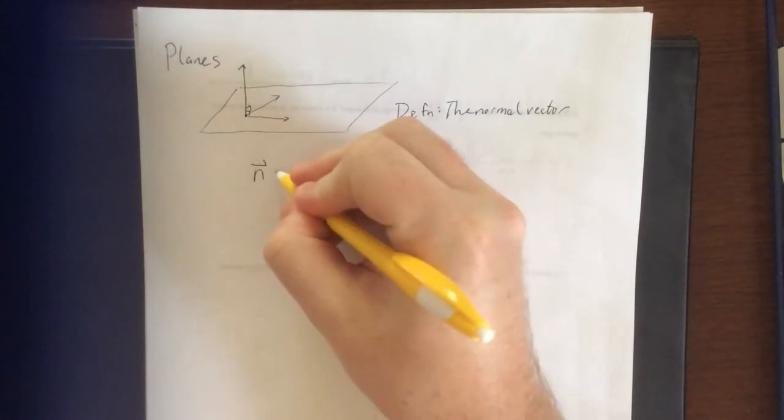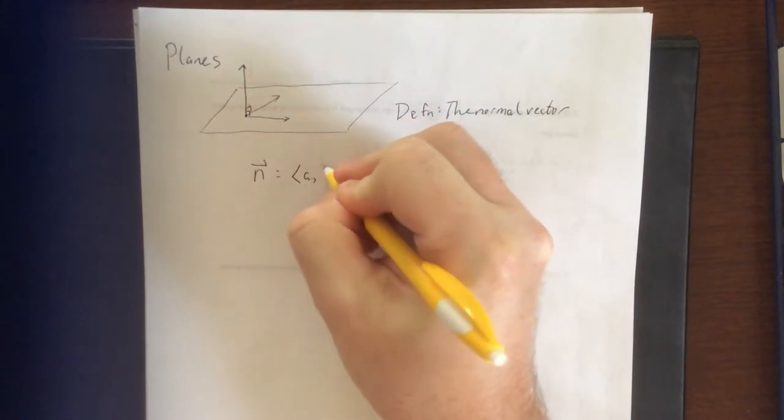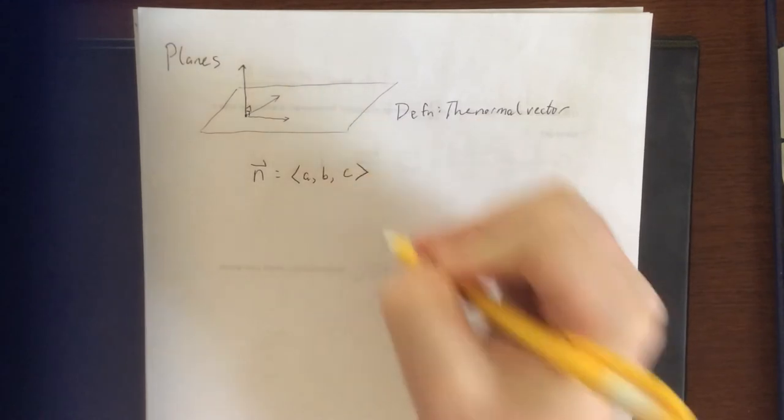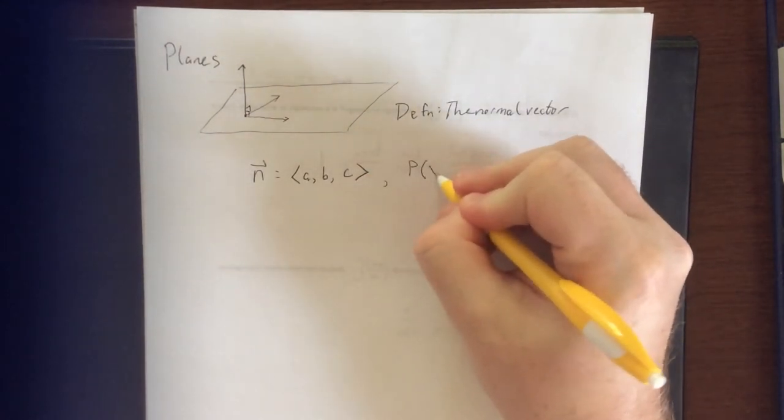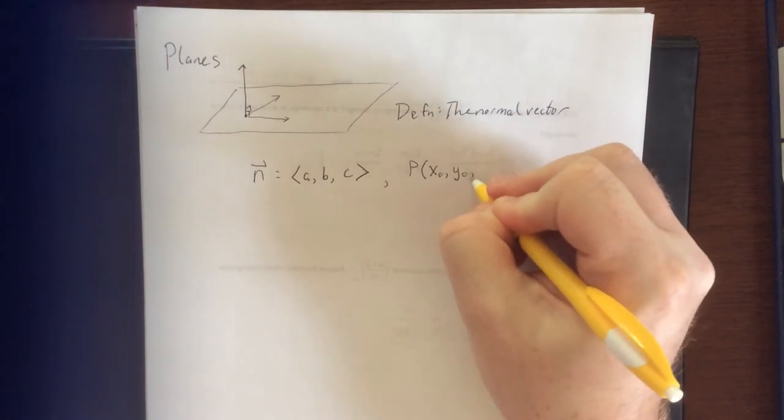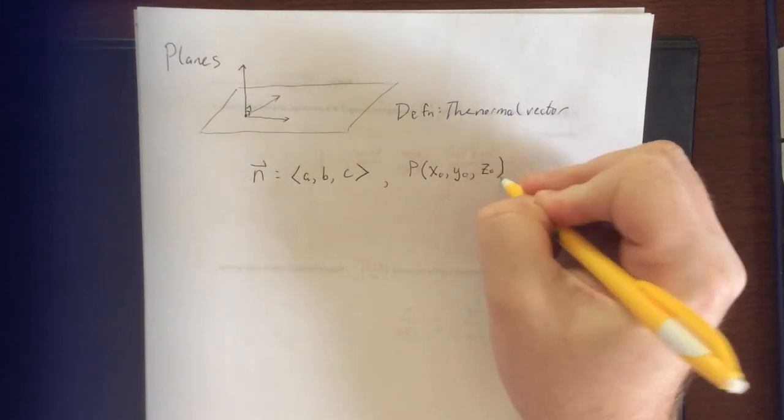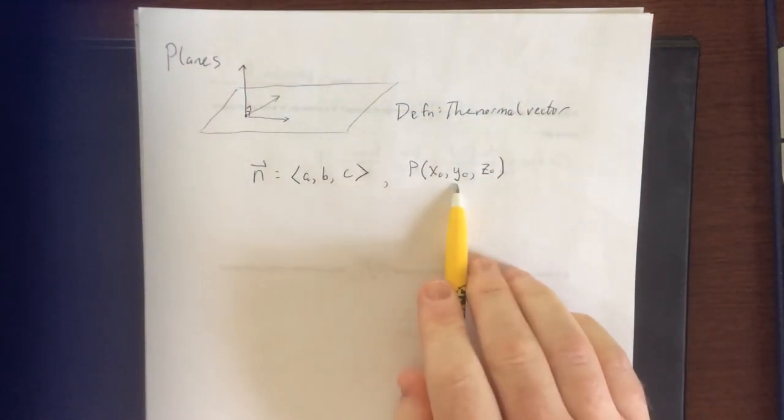So first off, let's assume that the normal vector takes on the following form. We'll let it have components of a, b, and c. And we'll define a point within the plane as well. We'll use the same naming convention that we used for the line. The point will be x naught, y naught, z naught.